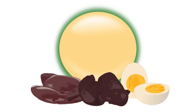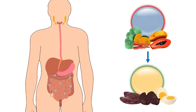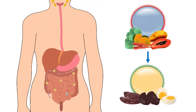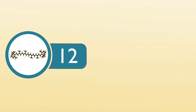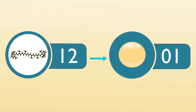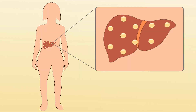Preformed vitamin A from animal sources is an active form of vitamin A, whereas provitamin A from plant sources is an inactive form. During digestion, it has to be converted to retinol, which is the active form. 12 micrograms of beta-carotene gets converted to 1 microgram of retinol, and this conversion occurs in the intestine. It is then absorbed and stored in the liver until required by the body.